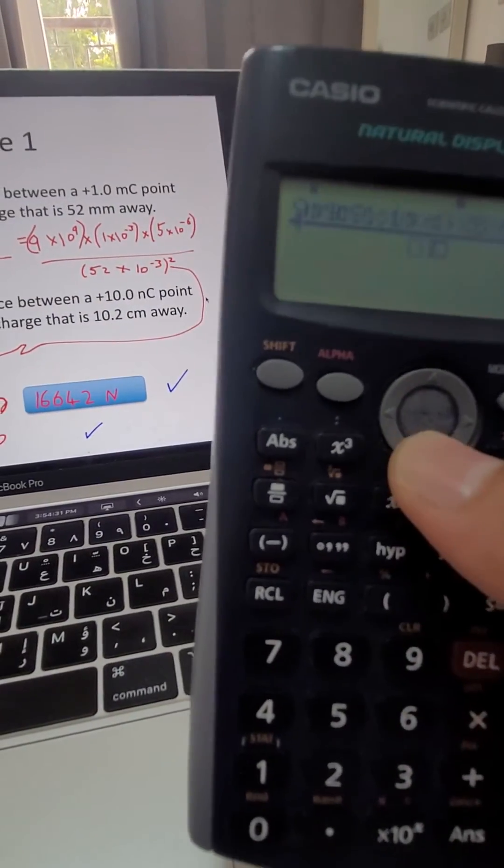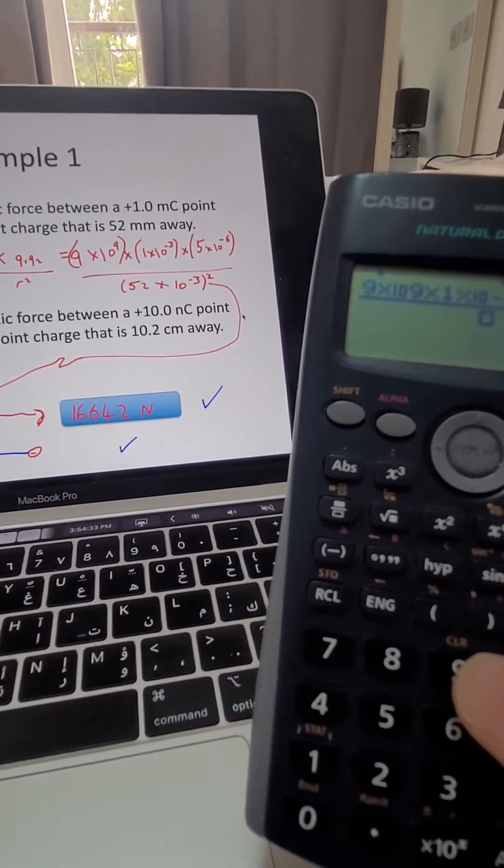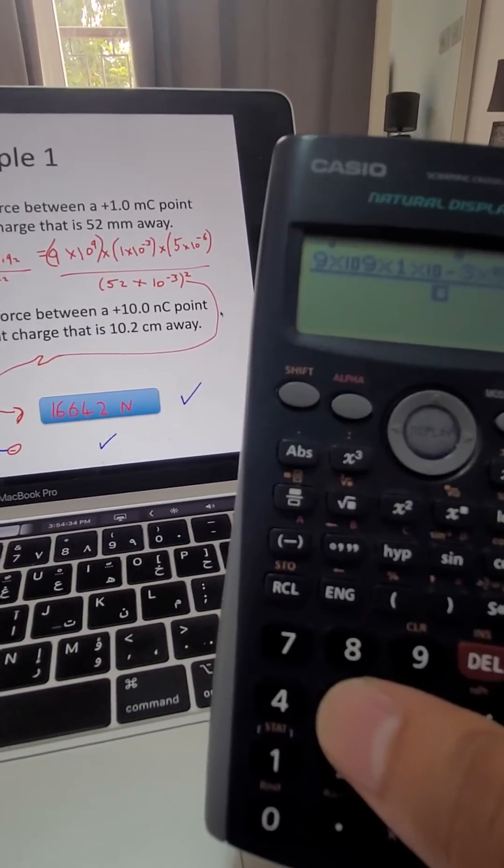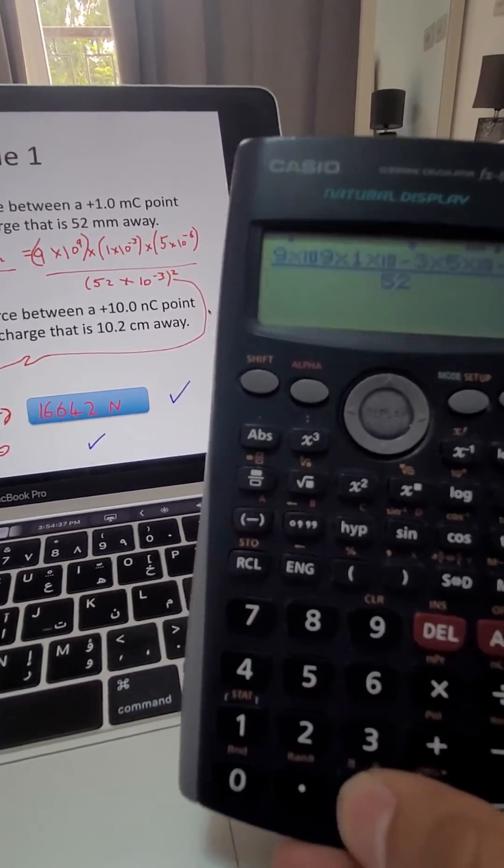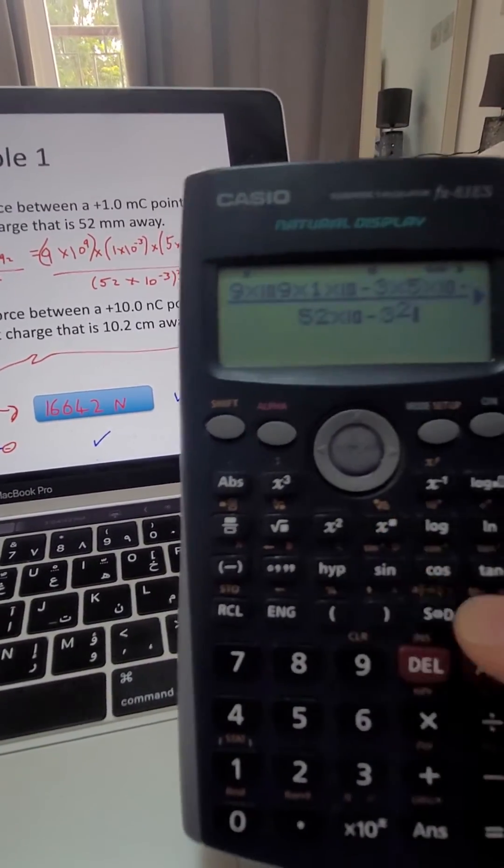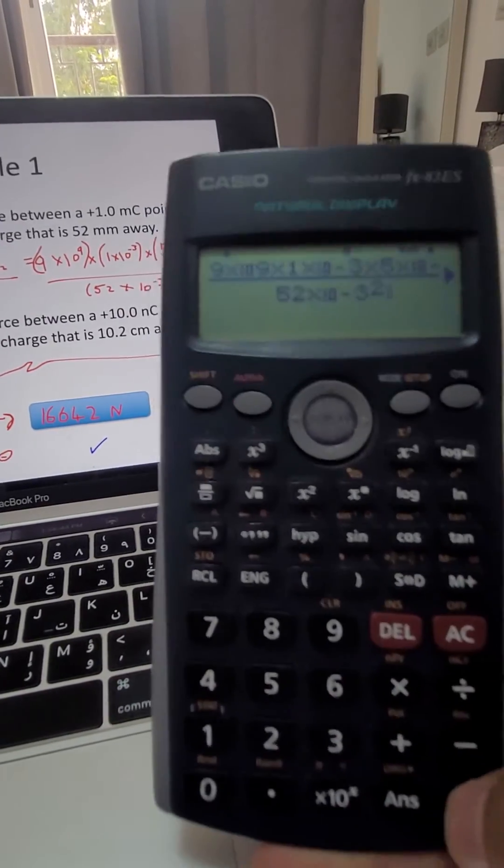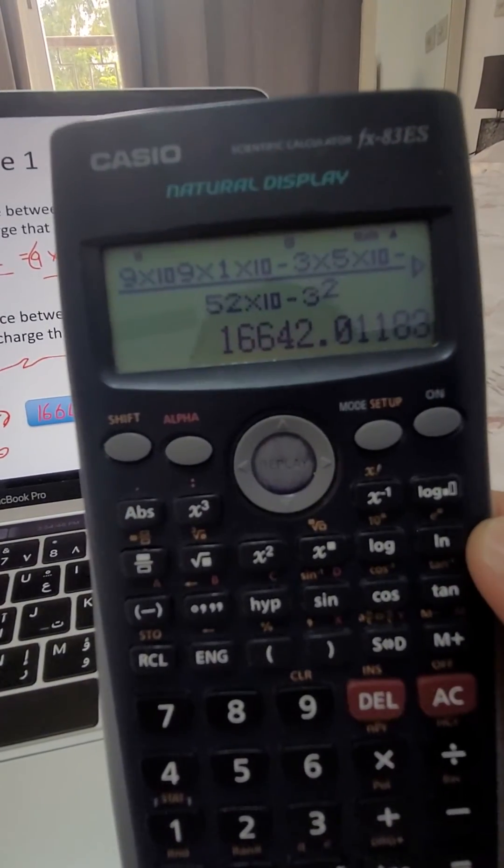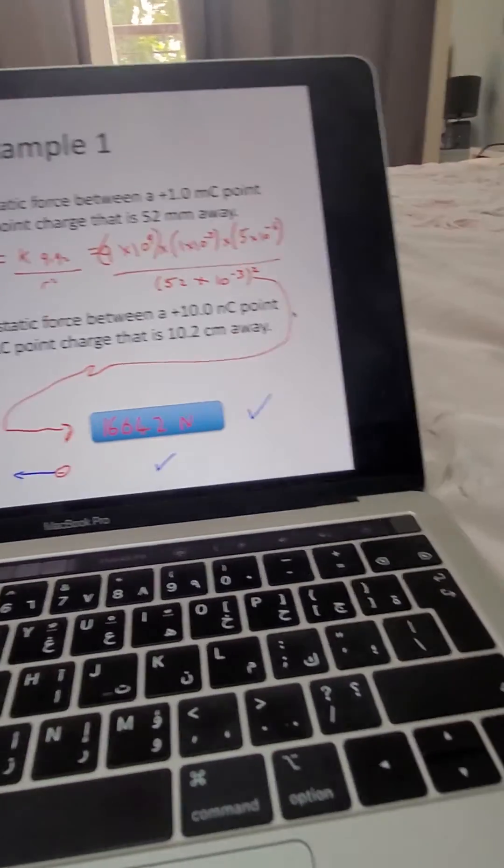So that's the top part done, press the down arrow here at the bottom now, and we have 52. So I'll write that here, 52 times 10 to the minus 3, and that's squared, so I'm going to square it. So that x button there is a square. Equals, and you will get 16642, and that's your answer.